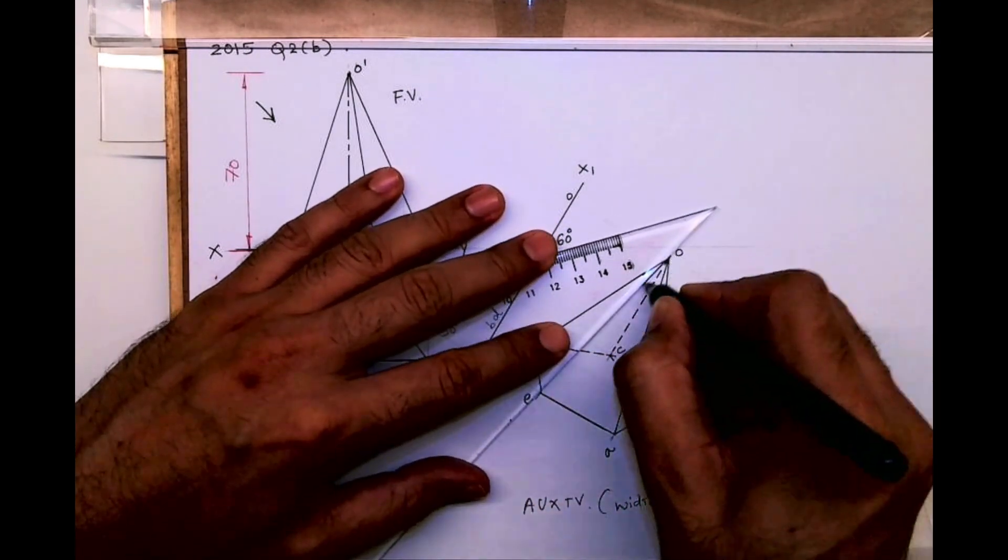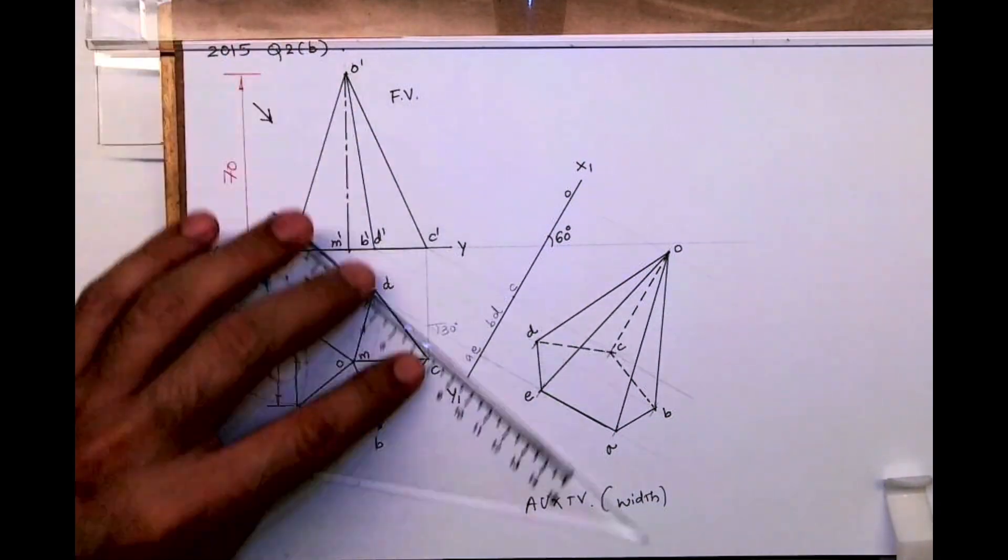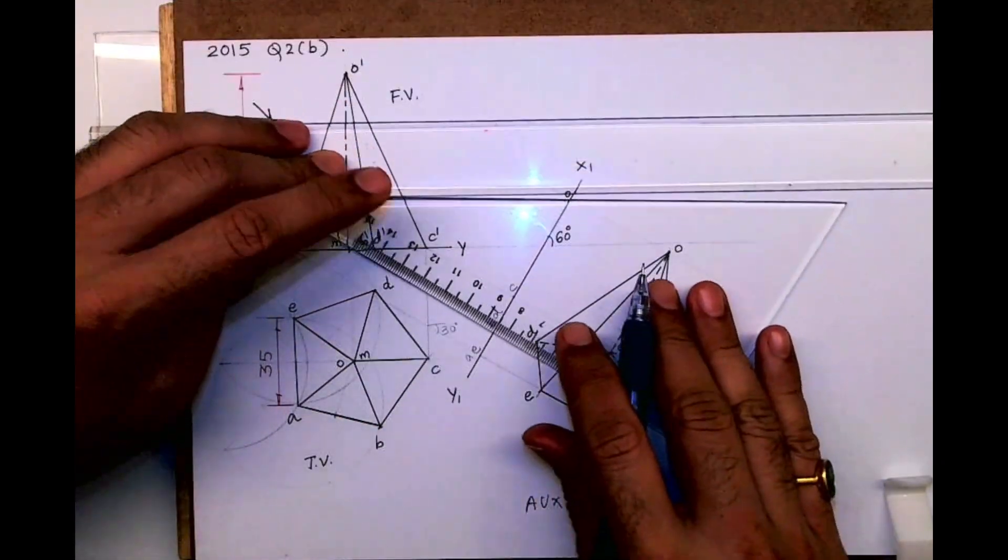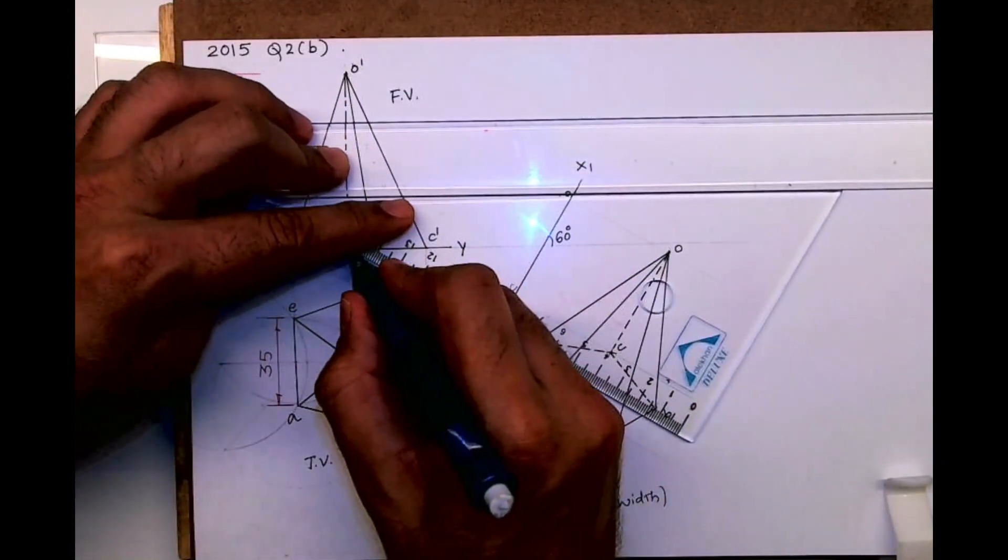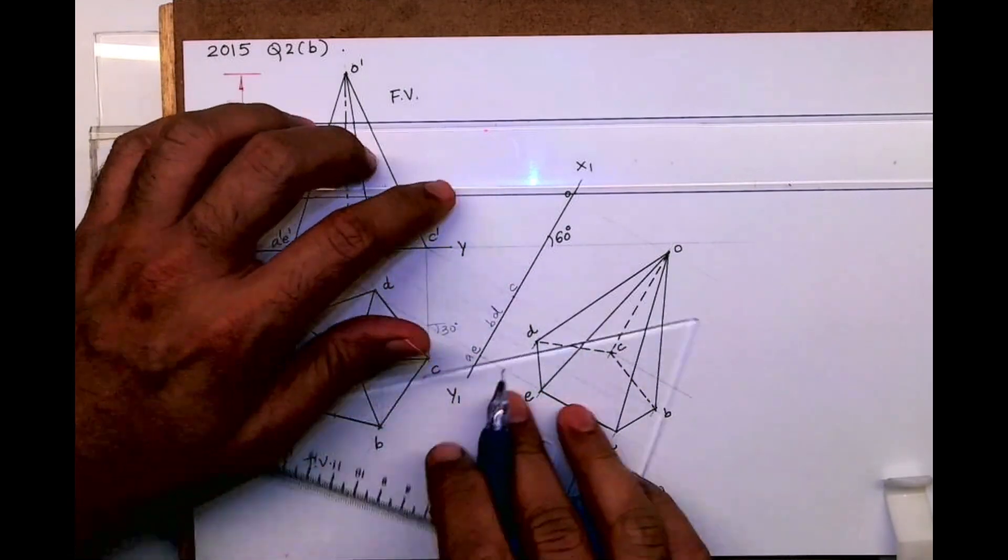So if you see, we are done with auxiliary top view. Now here I want to explain one important concept of axis line. Many people get confused how to draw the axis. Now see, when you have dotted line and axis, you should always give preference to dotted line.